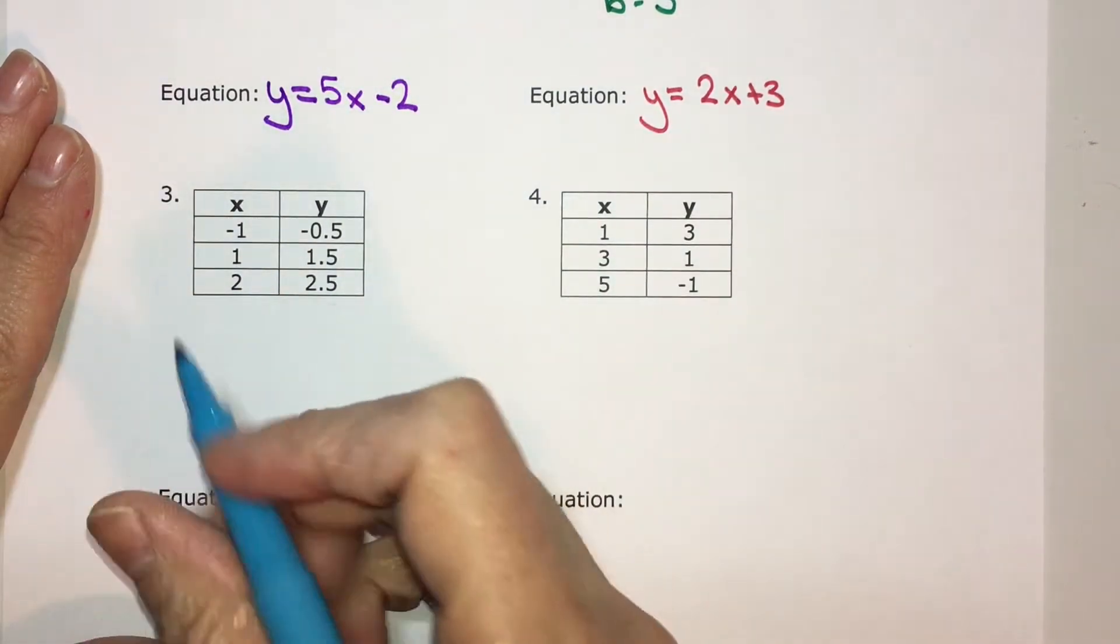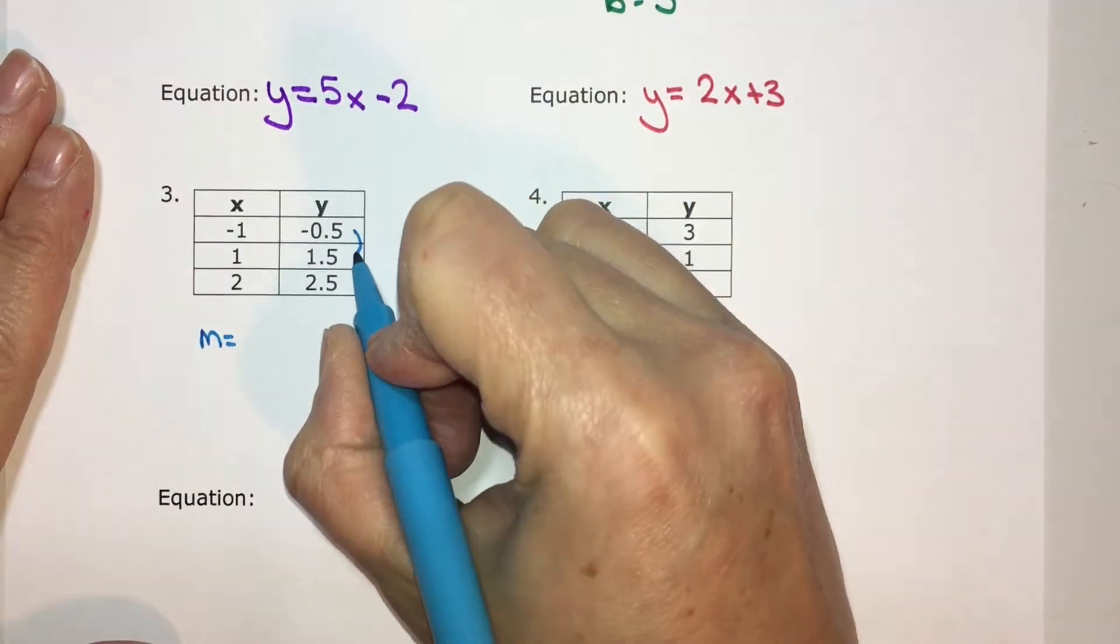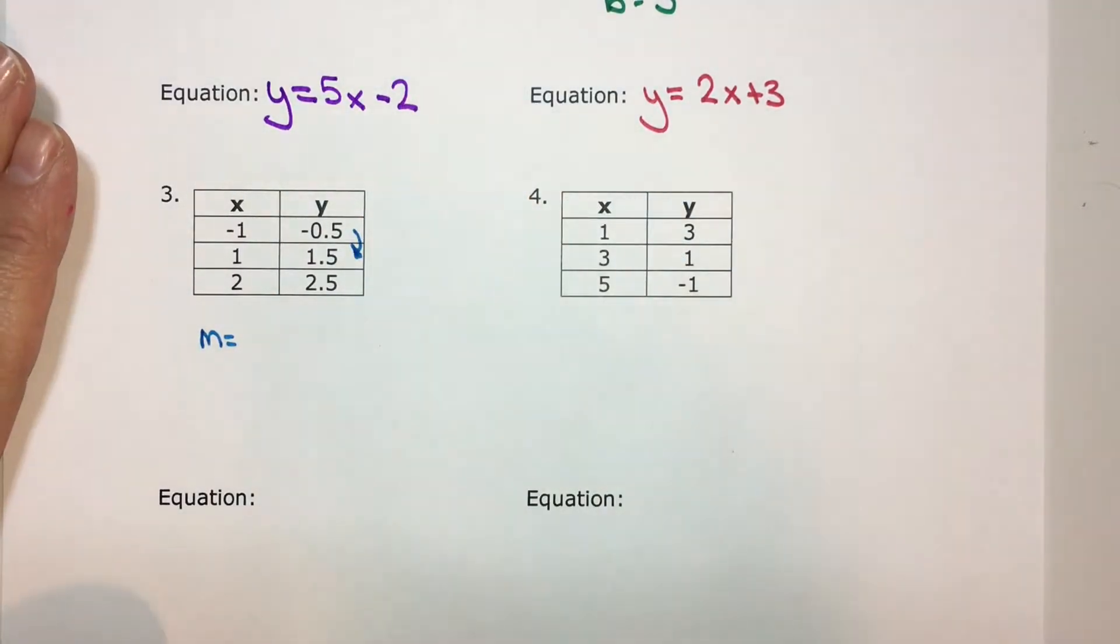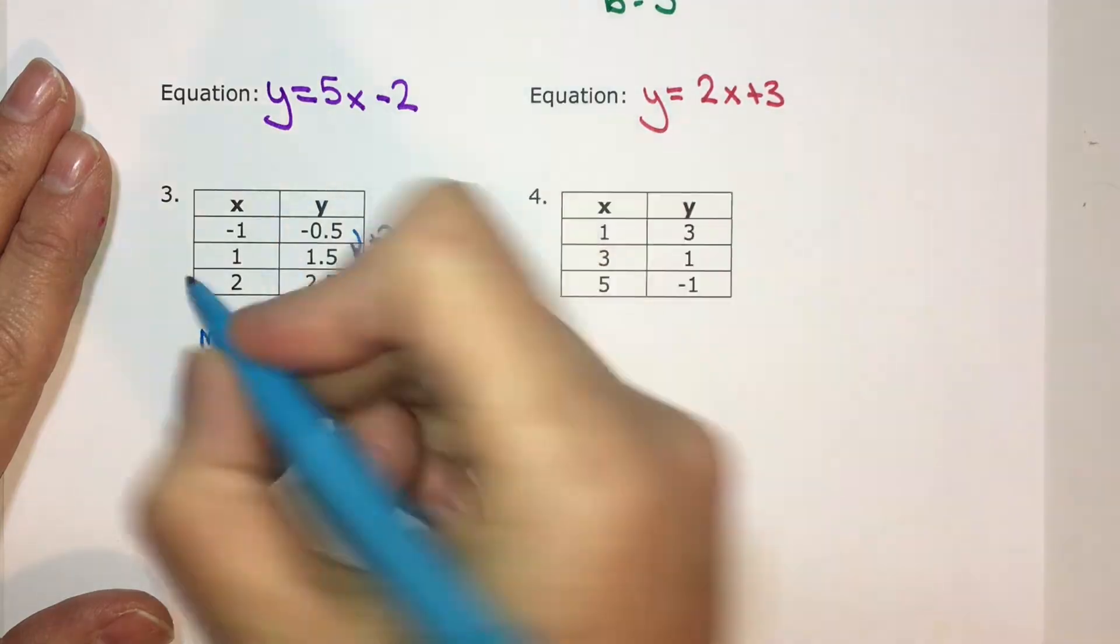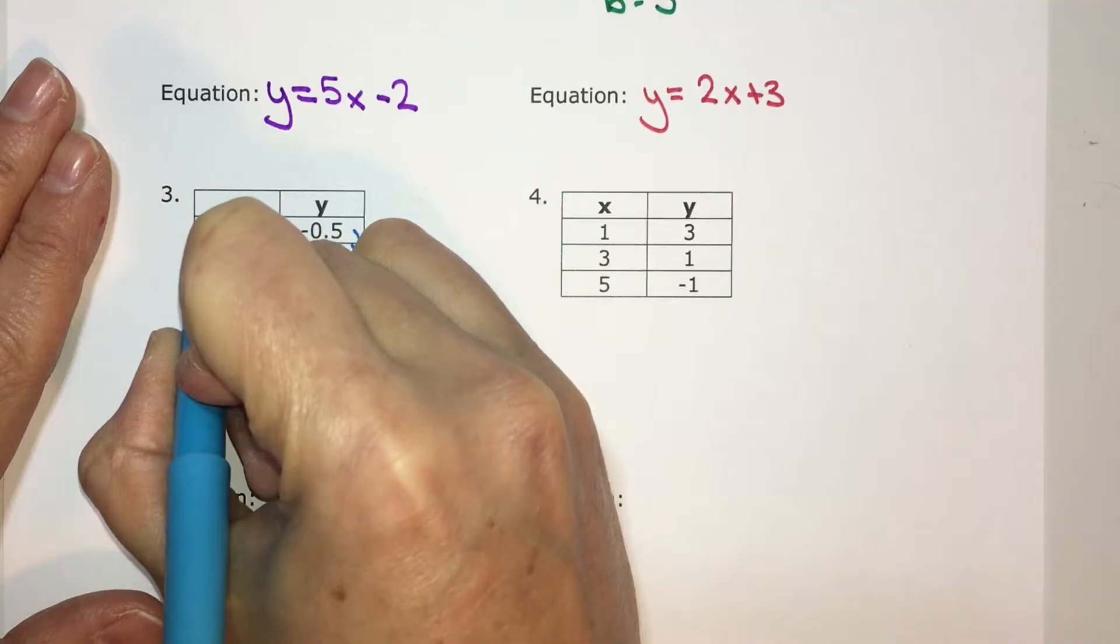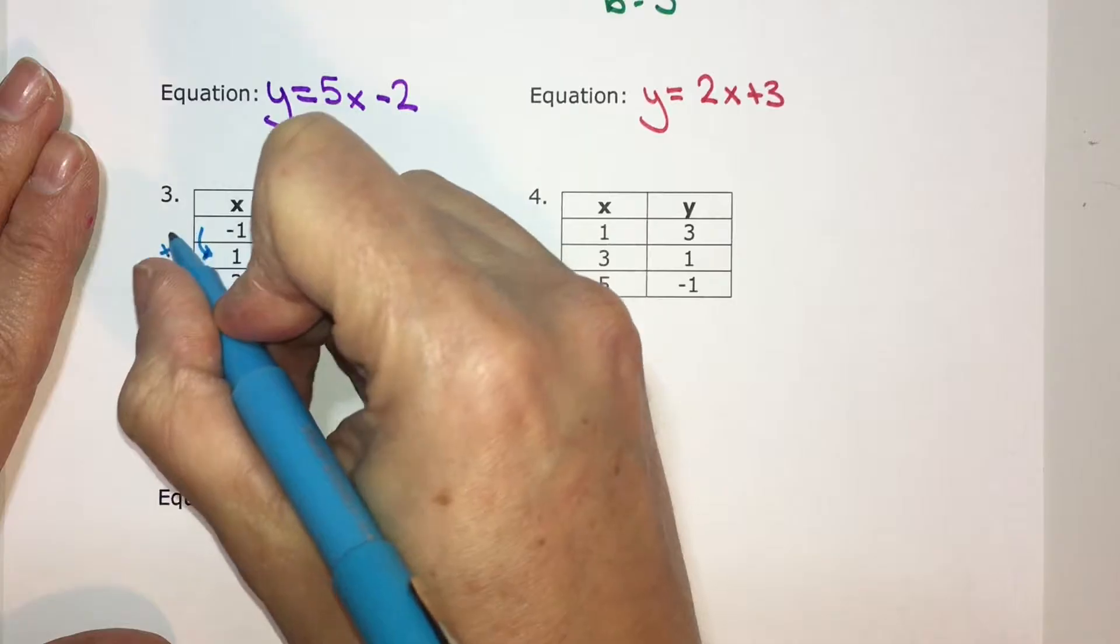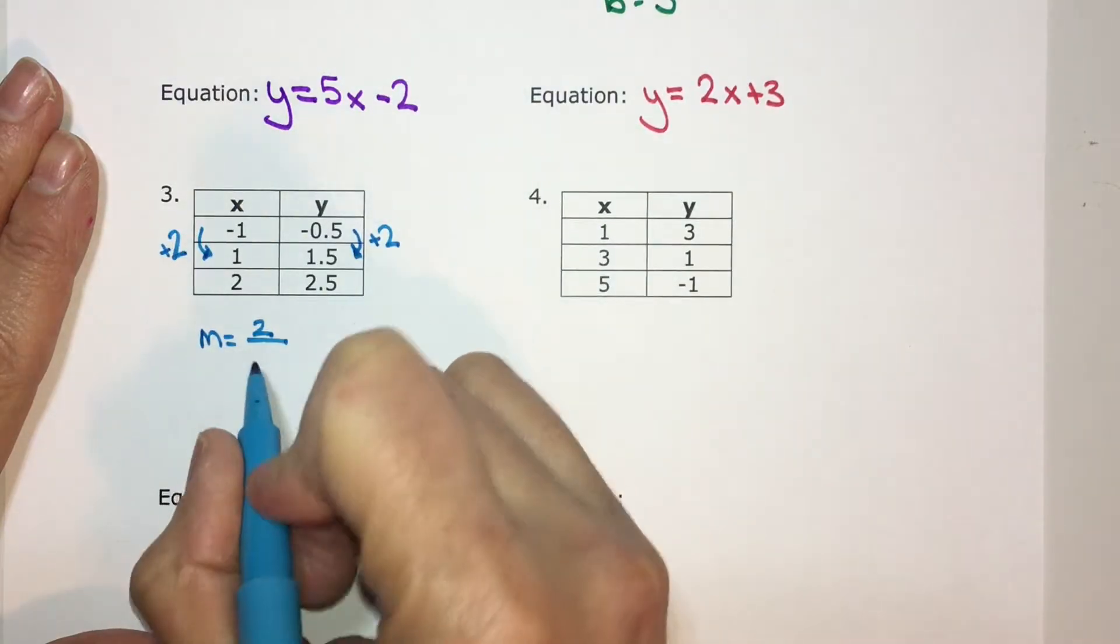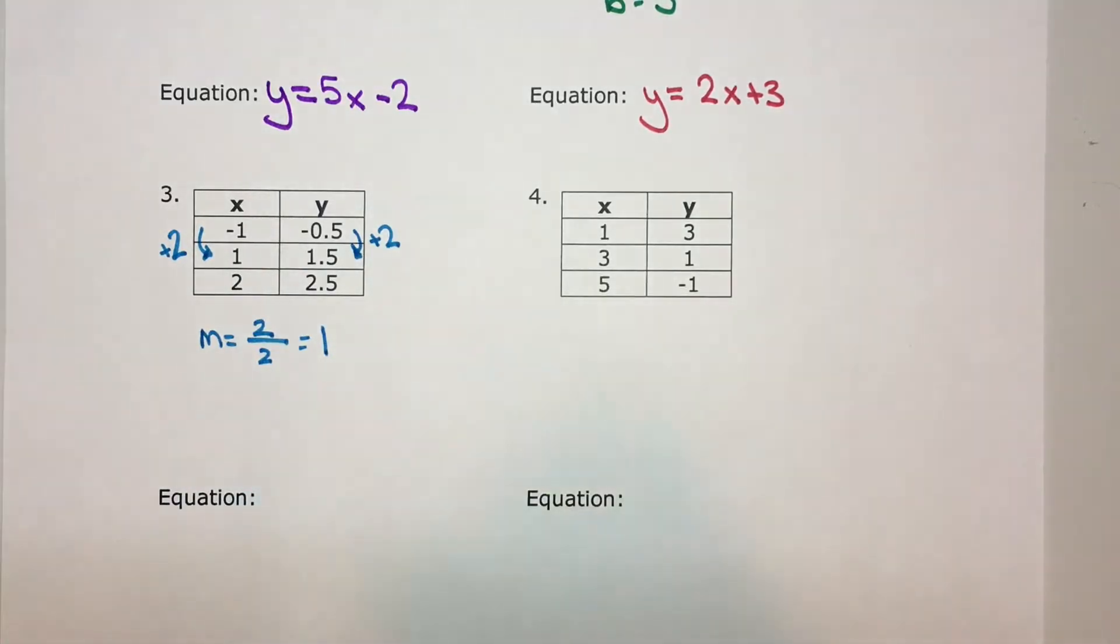I like to start with rate of change, or slope. Change in y. Go from negative 0.5 to positive 1.5. You're adding 2. So the change in y is 2, positive 2. Change in x to go from negative 1 to positive 1, adding 2 also. So 2 divided by 2 is 1. But I don't know where x is 0.